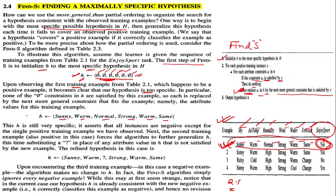That is the first step. None of the phi constraints in H were satisfied by this example, so each is replaced. H is still very specific — it asserts that all instances are negative except for the single positive training example observed. Now let us take the second training example.